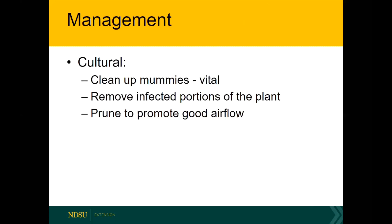For cultural management, clean up those mummies as best you can — that's absolutely vital to lower the disease pressure. If you do see black rot in the growing season, try to remove the infected portions of the plant to prevent those conidia from being released. If you prune the plant properly, you can open it up and promote good airflow, which reduces the microclimate humidity inside the vine and lessens the fungus's ability to continue developing.